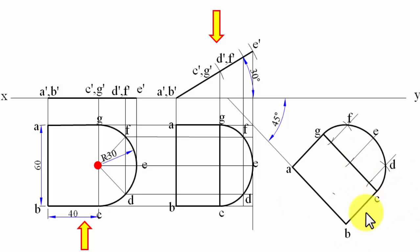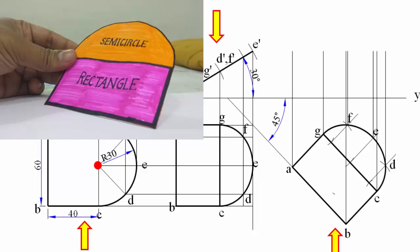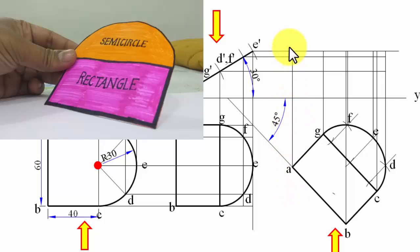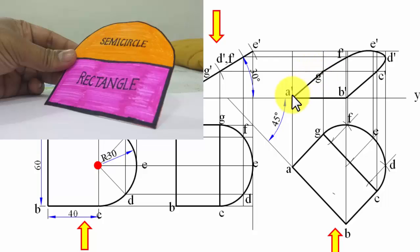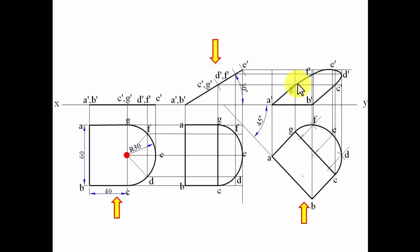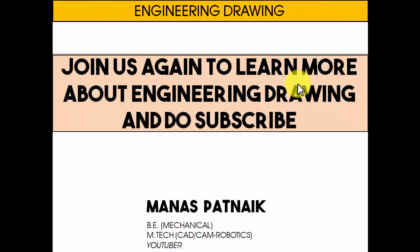Finally, we look at the object from the front to get the final front view. Projector lines from the left intersect with horizontal projector lines, and all points — A, G, B, C — are worked out. The straight edges G-dash to C-dash are drawn with straight lines, while the curve from C to G is drawn as a smooth free-form curve, since its top view was a semicircle. That's it — subscribe and join us again to learn more about engineering drawing.